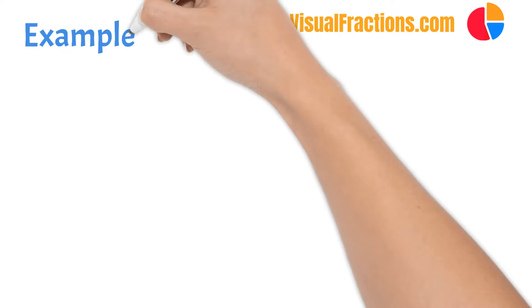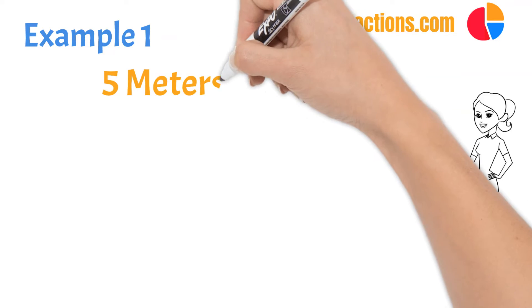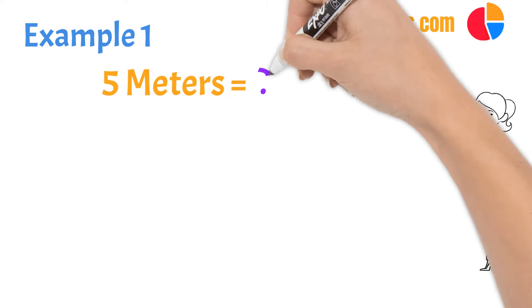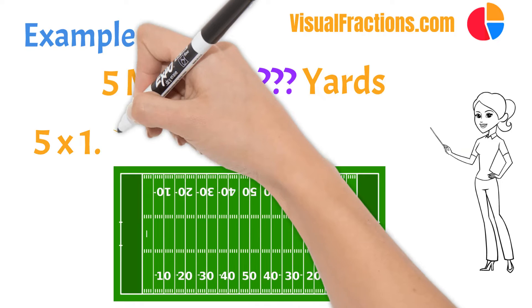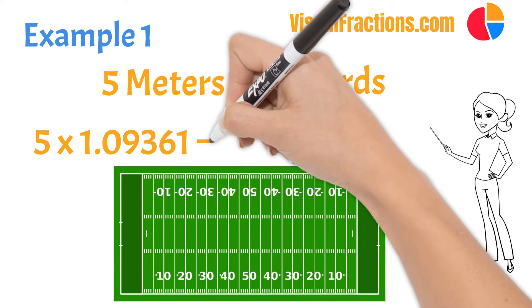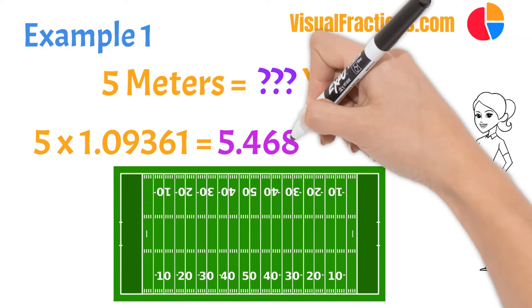Let's walk through an example. Suppose you have a length of 5 meters that you need to convert to yards. You would multiply 5 meters by 1.09361 to get 5.46805 yards.